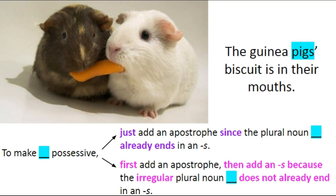Let's go through some examples. Here we have some guinea pigs. To make 'pigs' possessive in the sentence 'the guinea pigs' biscuit is in their mouths,' just add an apostrophe since the plural noun 'pigs' already ends in an s.